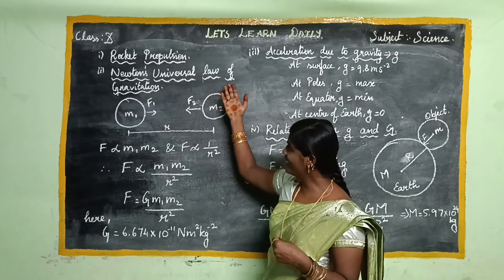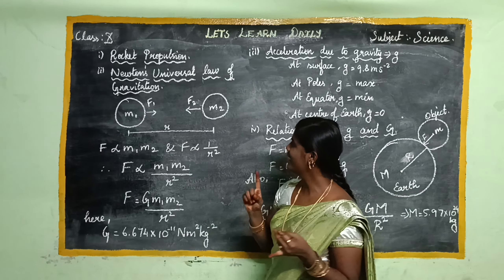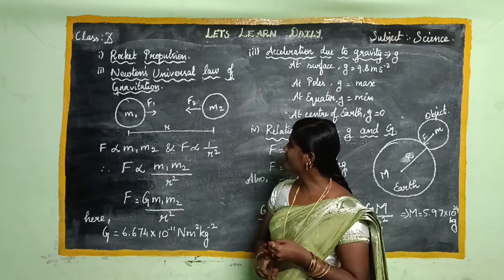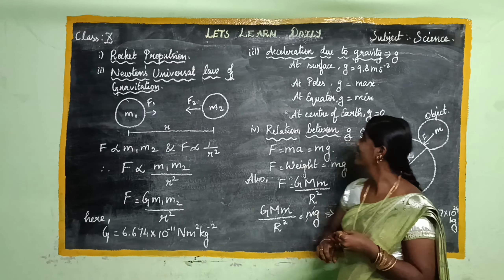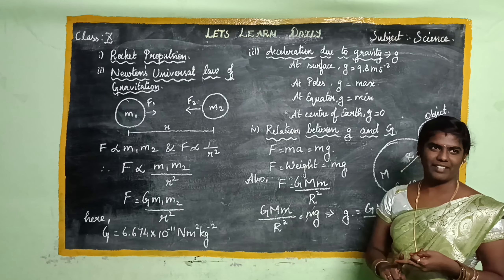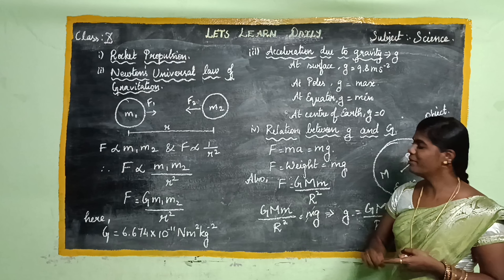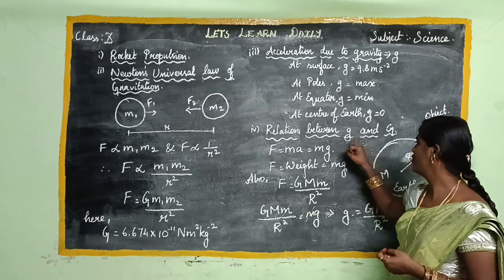We are going to see the following today: what is rocket propulsion, Newton's universal law of gravitation, acceleration due to gravity, and the relations between capital G and small g.